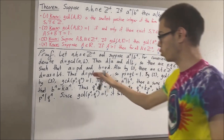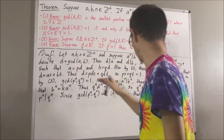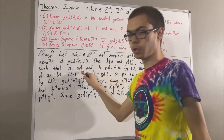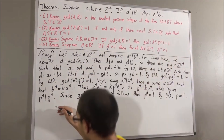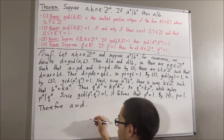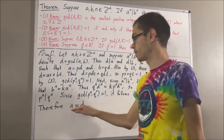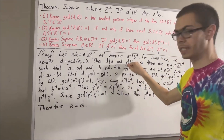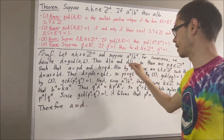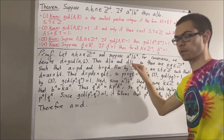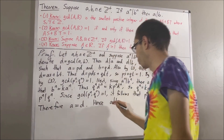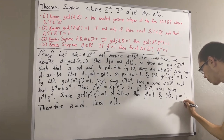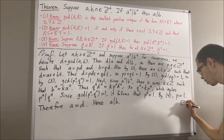Going to the equation a equals pd, since p is equal to 1, we substitute and get that a is equal to d. Since a is equal to d and d is a divisor of b, we substitute d for a and get that a is a divisor of b — which is exactly what we wanted to prove. This completes the proof.